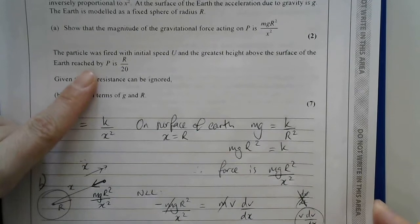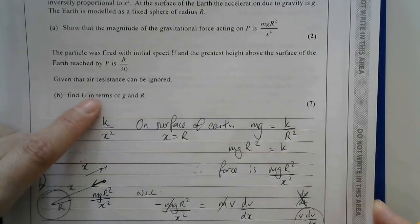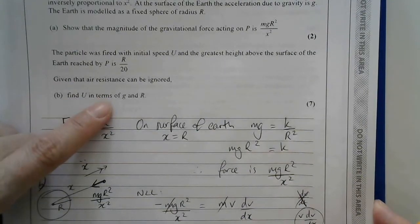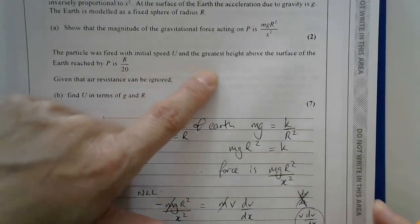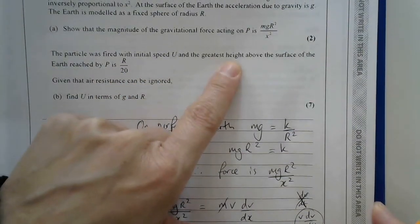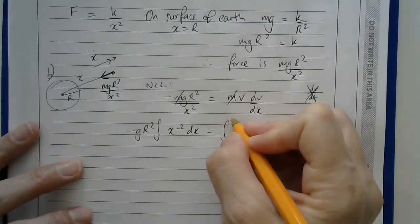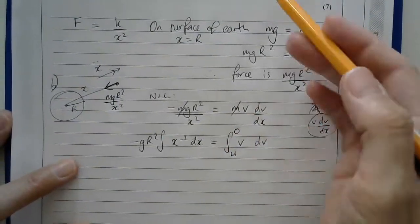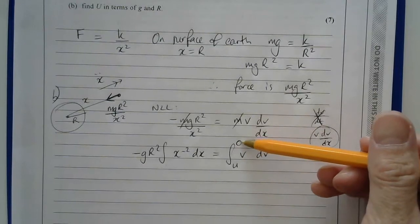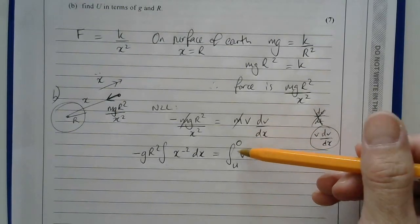It said the particle is fired with initial speed u. And the greatest height, so I know the final speed is b. So the initial speed is u, and the final speed is 0, because at the greatest height, the particle will have stopped moving.